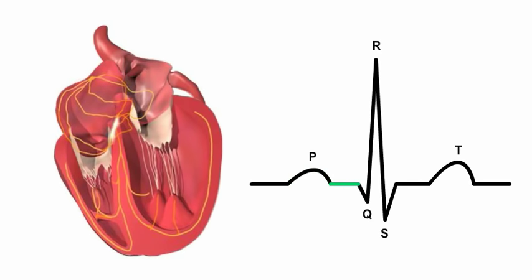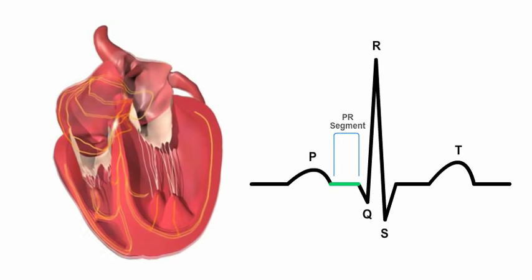The period of conduction that follows atrial systole and precedes the contraction of the ventricles is depicted on the ECG by the PR segment, a flat line following the P wave.